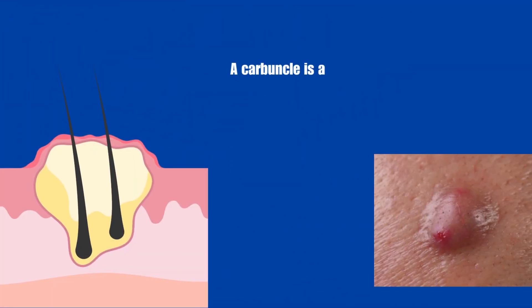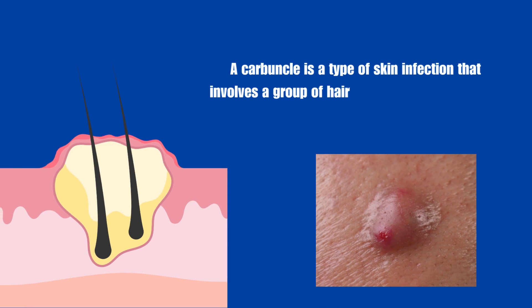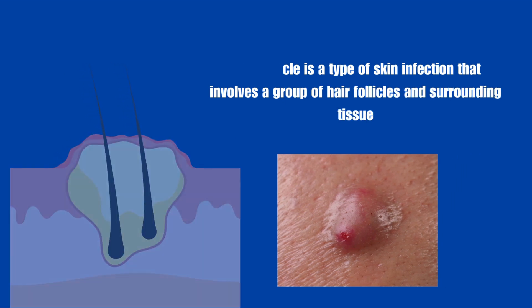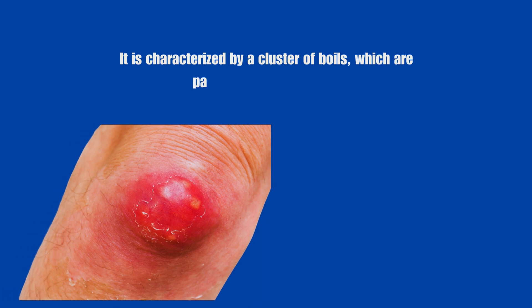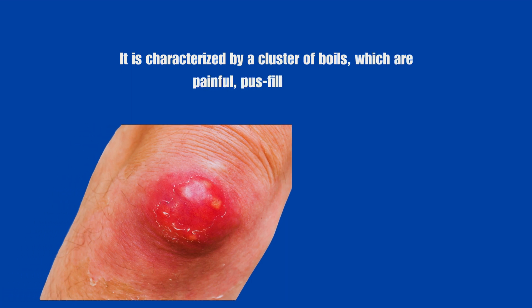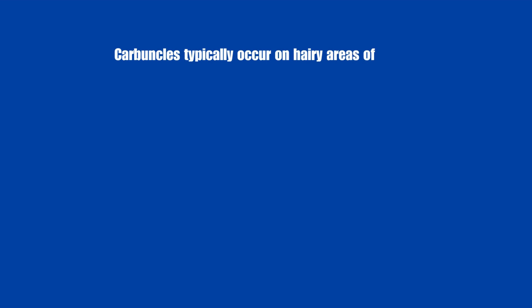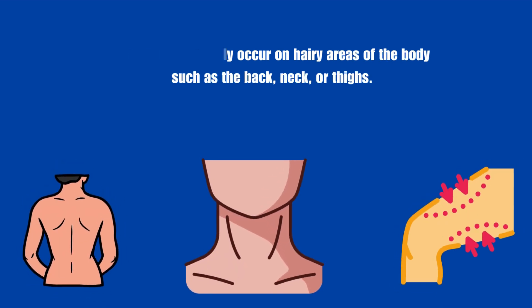A carbuncle is a type of skin infection that involves a group of hair follicles and surrounding tissue. It is characterized by a cluster of boils, which are painful, pus-filled lumps. Carbuncles typically occur on hairy areas of the body such as the back, neck or thighs.